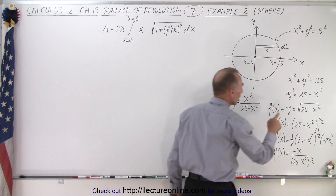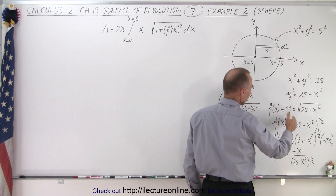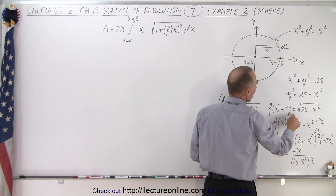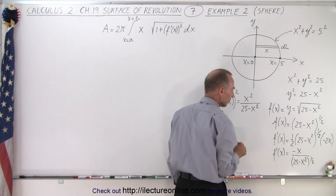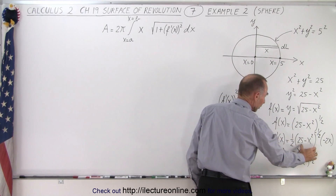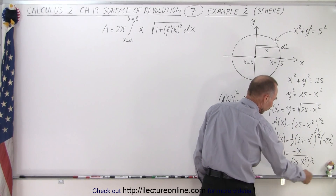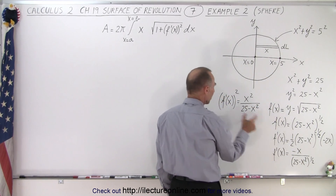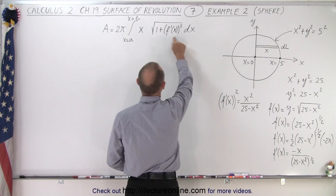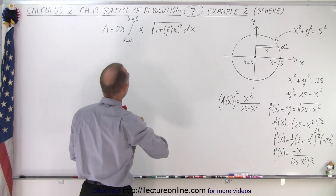We have x squared plus y squared equals 25, so y squared equals 25 minus x squared. Taking the square root of both sides, we only take the positive part because we want the top half: y equals the square root of 25 minus x squared. We take the derivative — one half times the quantity to the minus one half, times the derivative of the inside which is minus 2x. Simplified, that's our derivative, and when we square it we get x squared divided by 25 minus x squared, which gets substituted into the surface of revolution formula.